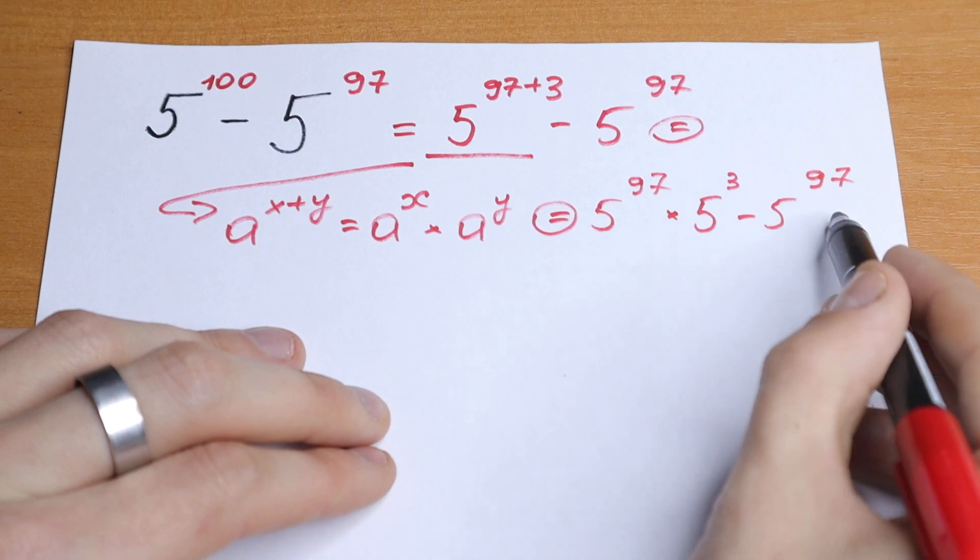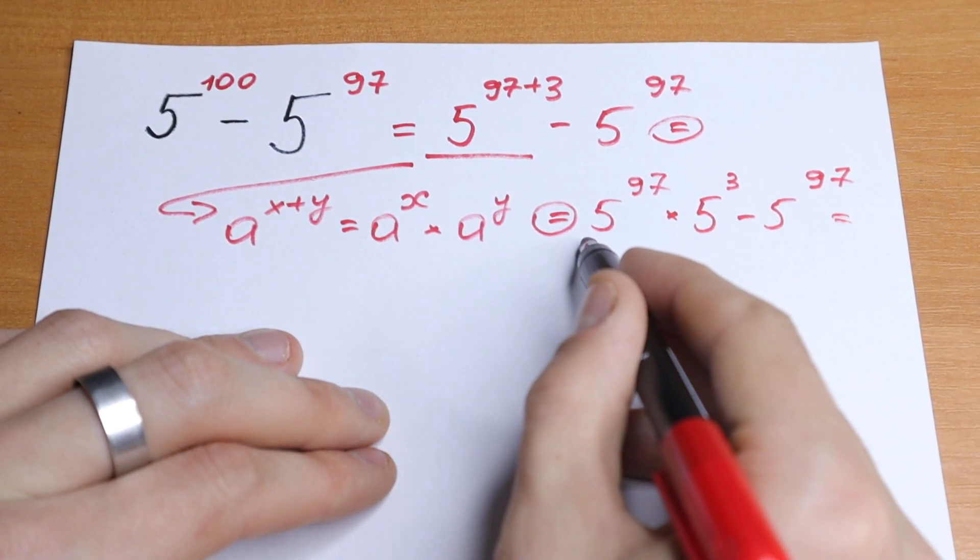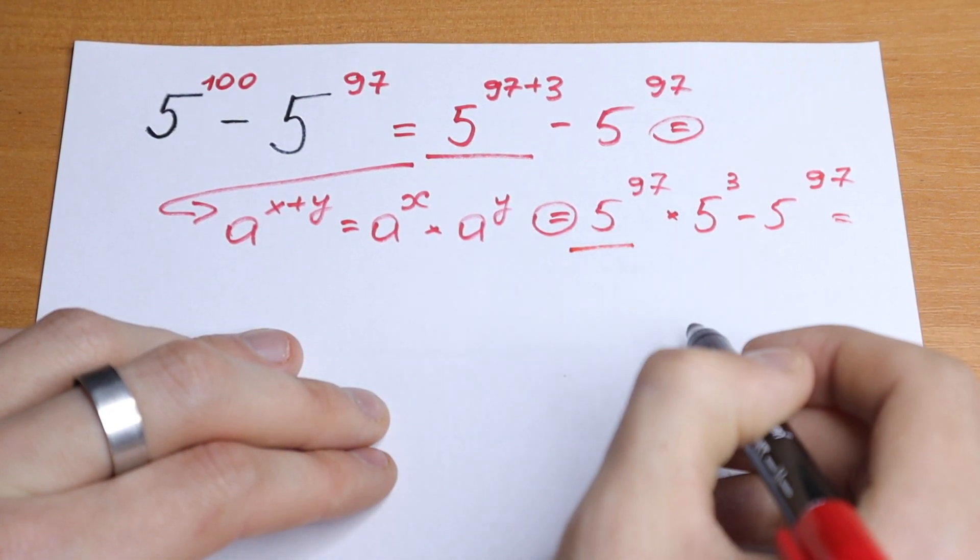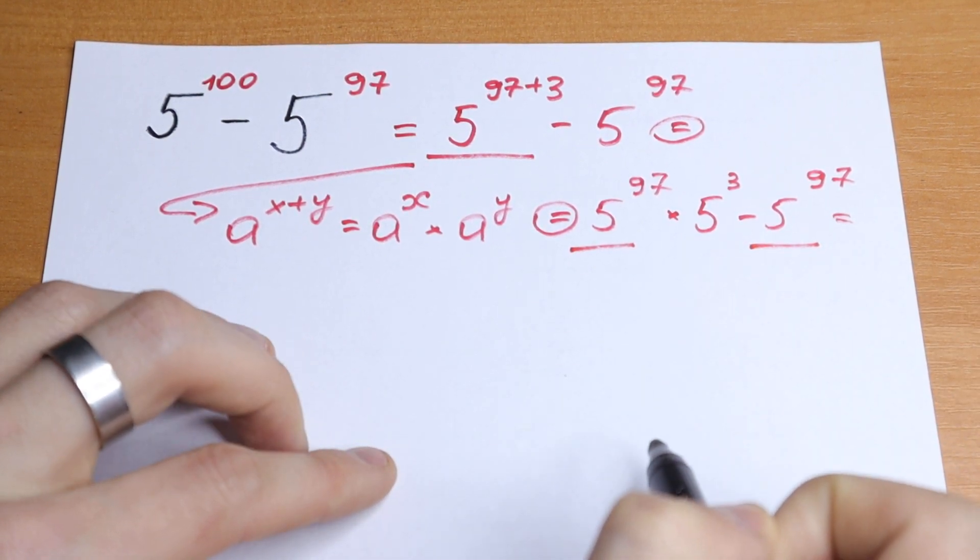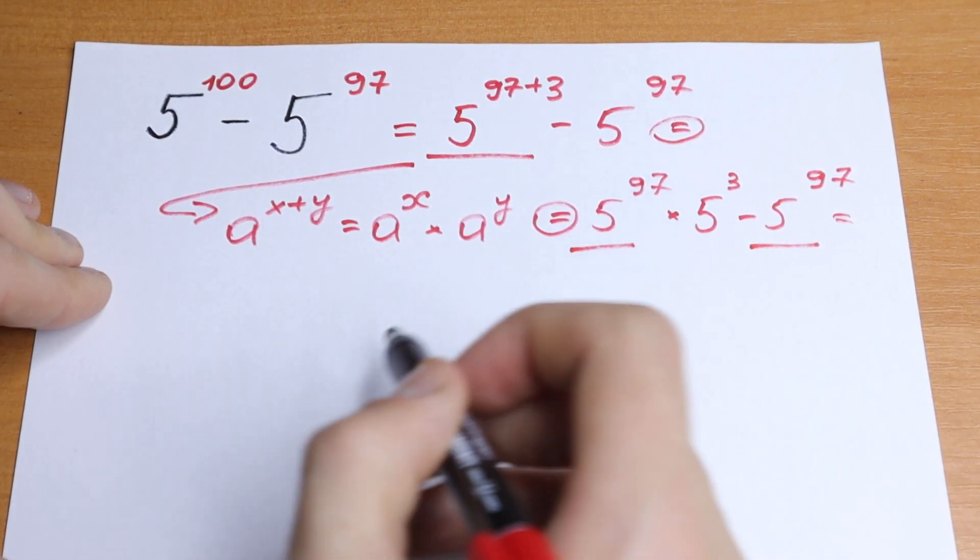So what we will do next? Take a look. We have this expression. On the left side, we have 5 to the power 97, and right here we have 5 to the power 97. So we can factor it.